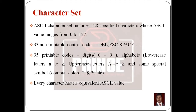In the printable characters, there are digits: 0, 1, 2, up to 9 — totally 10 digits. There are lowercase alphabets, a to z, and uppercase alphabets, A to Z — so totally 52 alphabets. And there are some special symbols, like comma, colon, hash, and dollar.